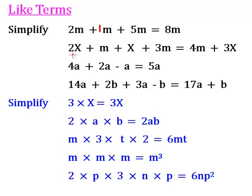In the next one we have 2x plus m plus another x plus 3m. We can add together the terms which are alike. So we can add together 2x and 1x which will give us 3x, and m which is 1m plus 3m which will give us 4m. So that is 4m plus 3x.